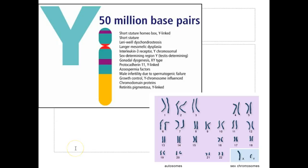That's why at birth we see a higher male-to-female ratio, but males don't have the greatest immune system and tend to do risky things. So what ends up happening is at reproductive age, we find that there are a lot more females than males.